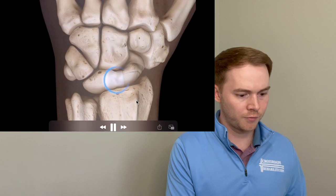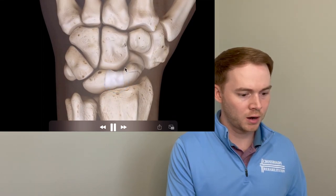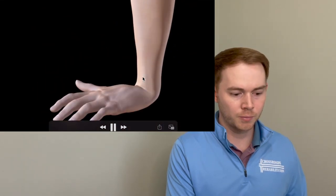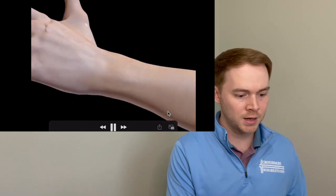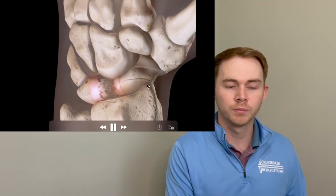Let's take a look at our diagram here. There's your scaphoid, and there's your lunate. The scapholunate ligament — again, this comes from that fall, that FOOSH — fall on outstretched hand. As you can see in the diagram, the scapholunate ligament splits in two.